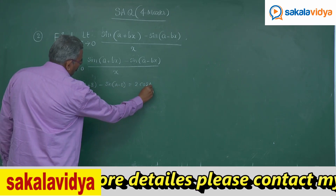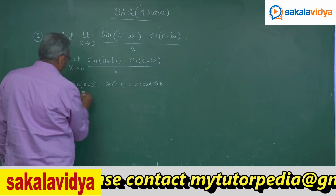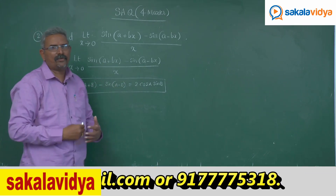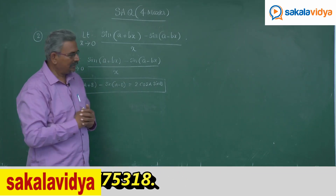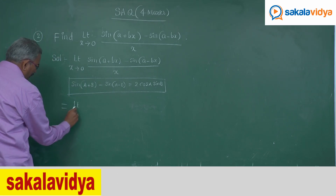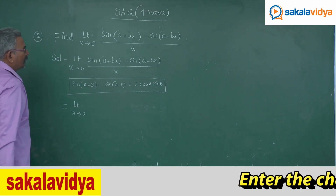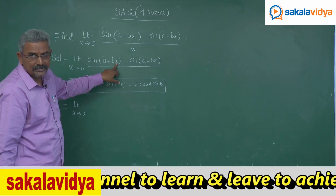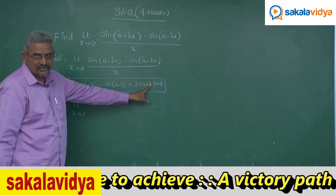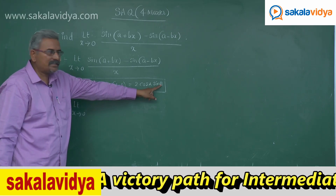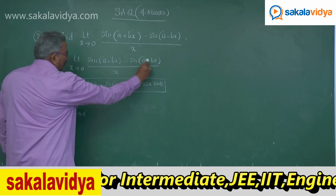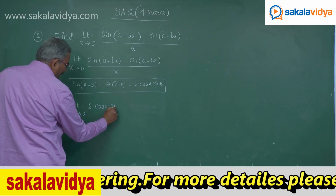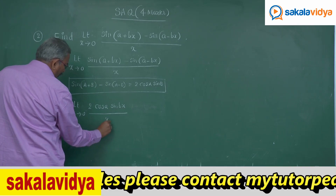So now the numerator can be written in the form of 2 cos, using the formula — where a is a and b is bx — so we can write: limit x tends to 0 of 2 cos a sine of bx, divided by x.